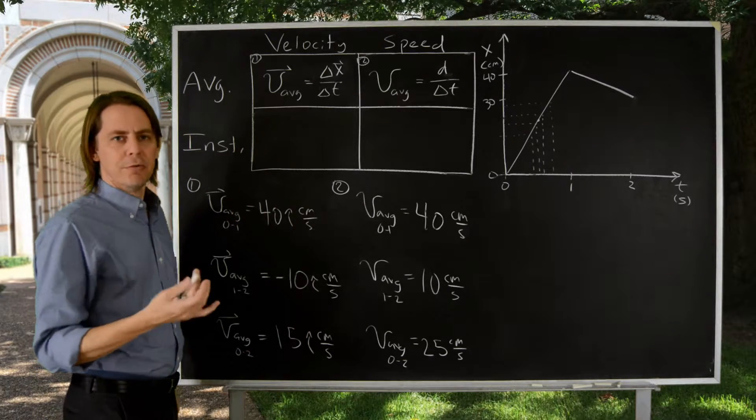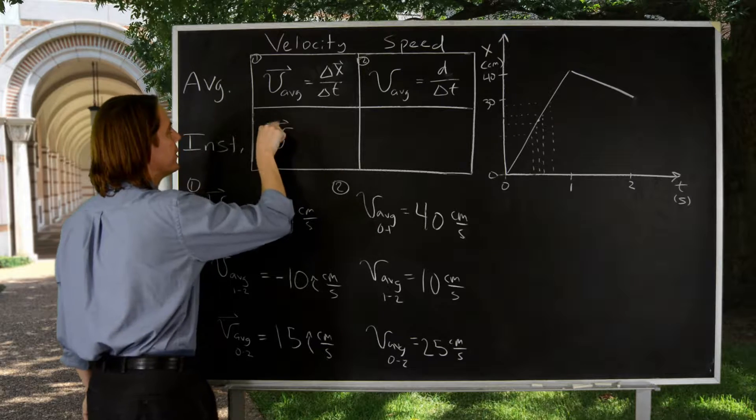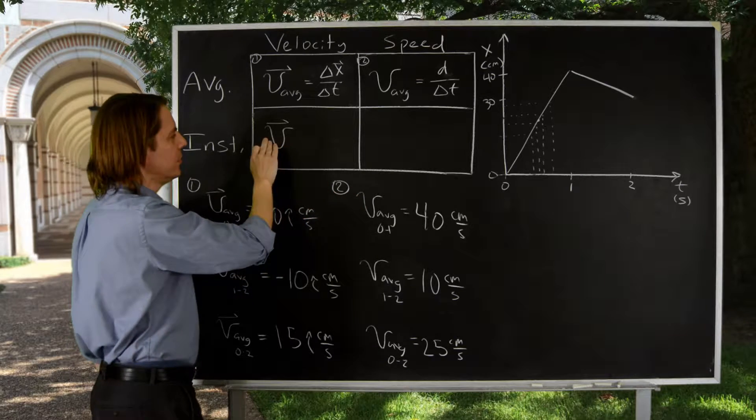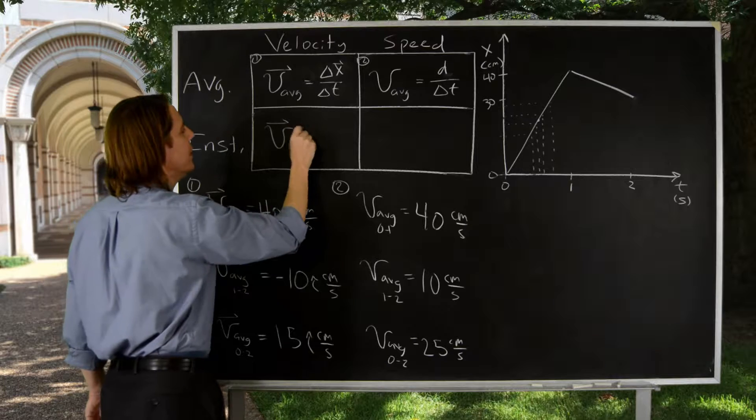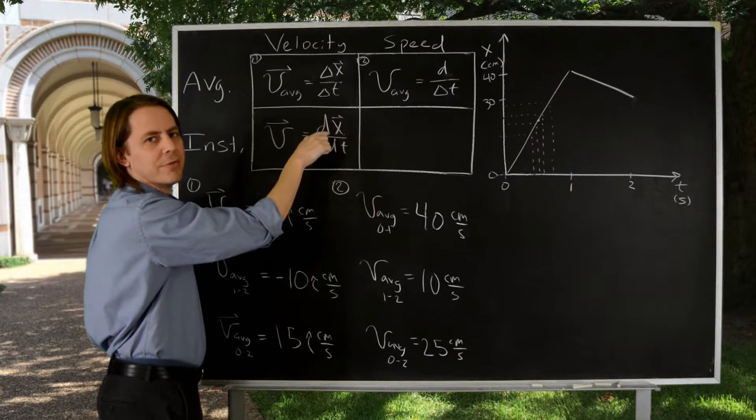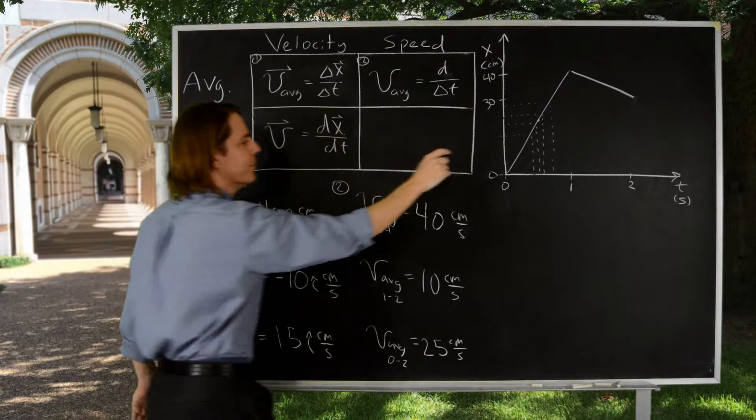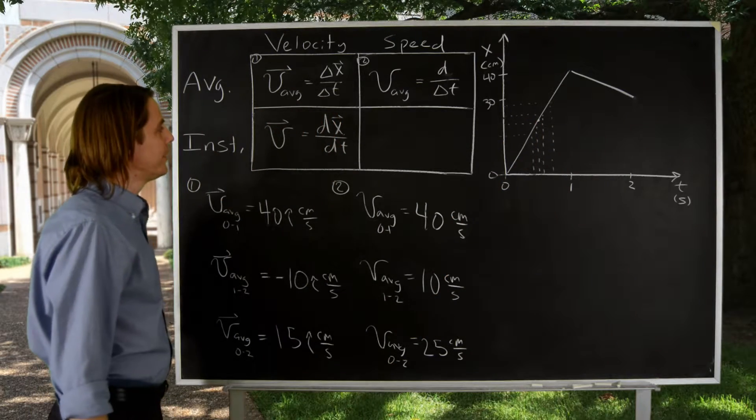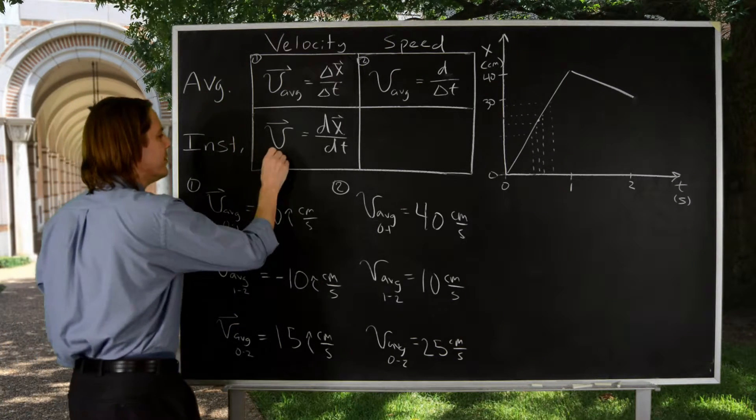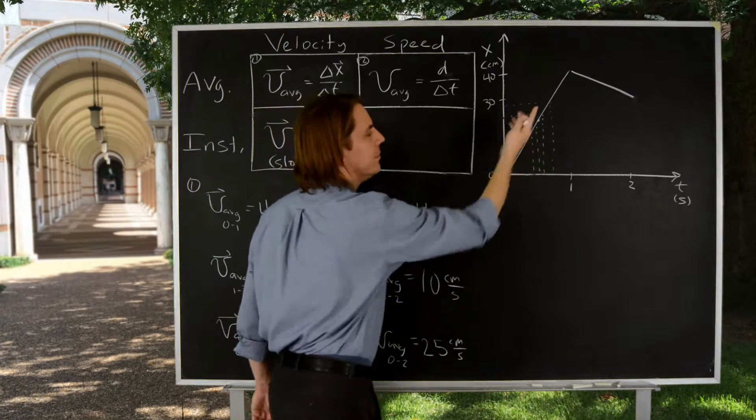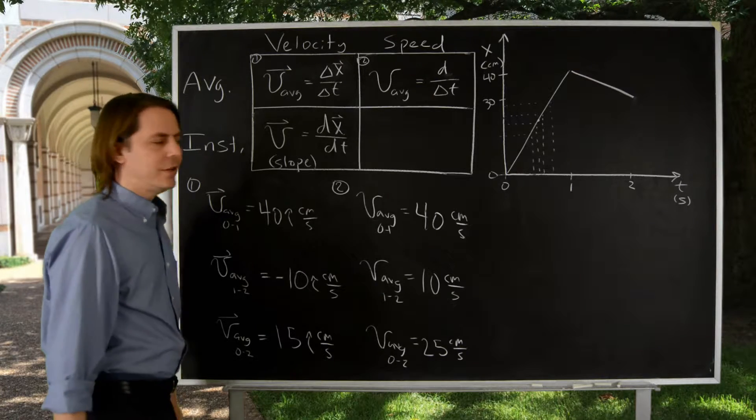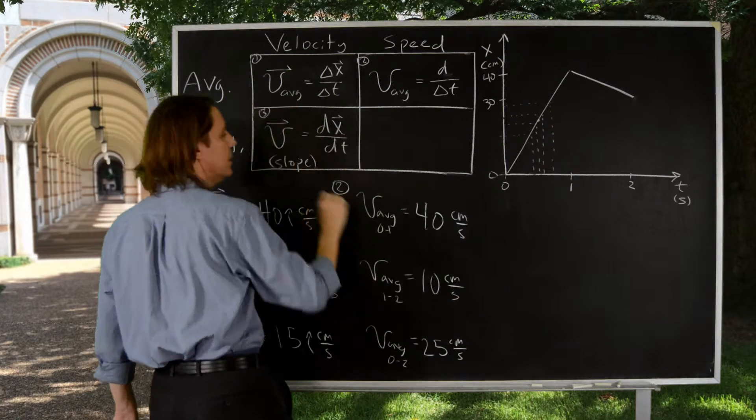And that, in calculus, is the derivative. So, what we can write then is V, it's a vector because it's velocity. For instantaneous, we just put nothing down here. We don't write INST, we just leave it off. If it's got that there, it's average; with nothing, it's instantaneous. So that is just the derivative, dx dt. Often it'll be written as the position vector. If you haven't had calculus, this is also just the slope. It's the slope of the line at that point.